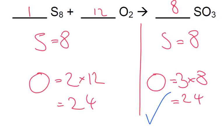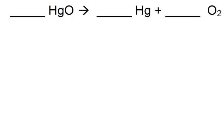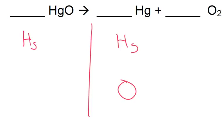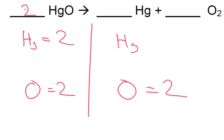Next up, we've got mercury oxide going to mercury and oxygen. So let's split our page here. We've got mercury, Hg, and we've got oxygen. On the right-hand side we've got two, so it might be a good idea to put two here, then we know we've got two here. Two times one for the mercury means we've got two here. So we're going to have to have a two here — let's put two in front, one there. We are balanced.